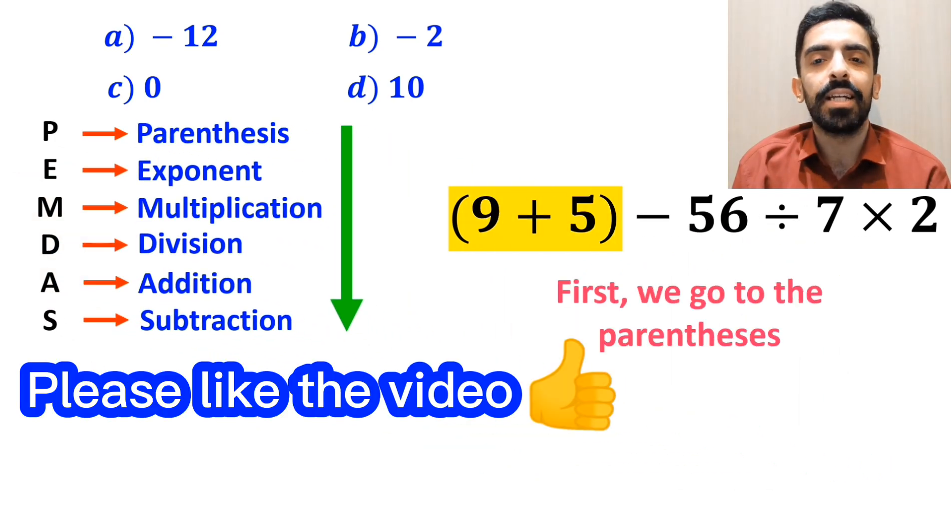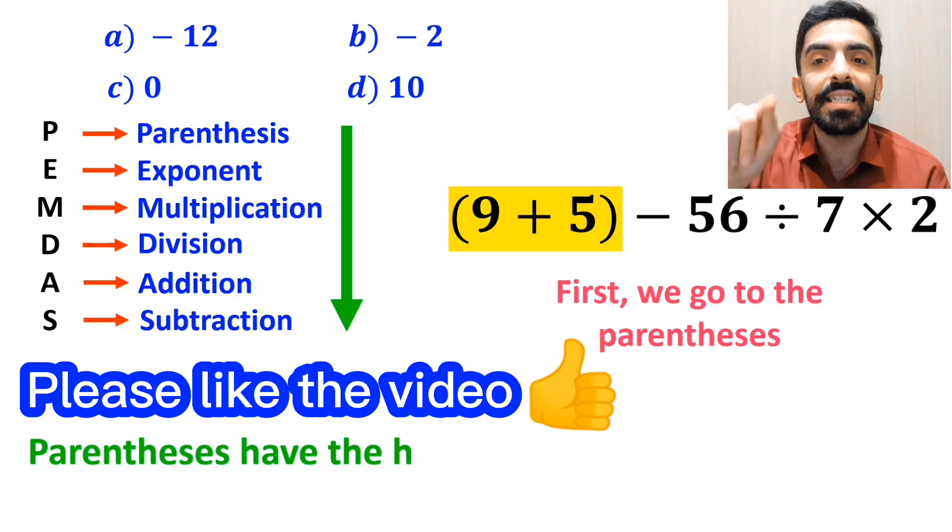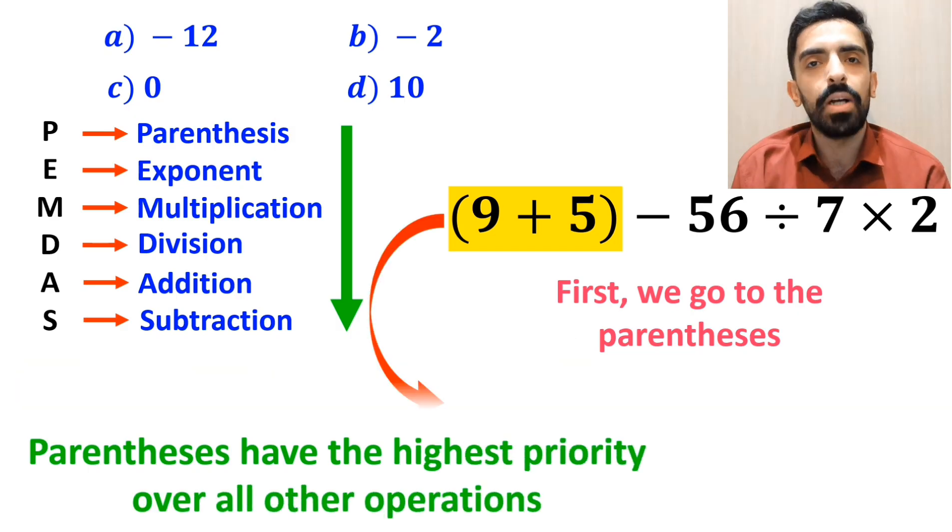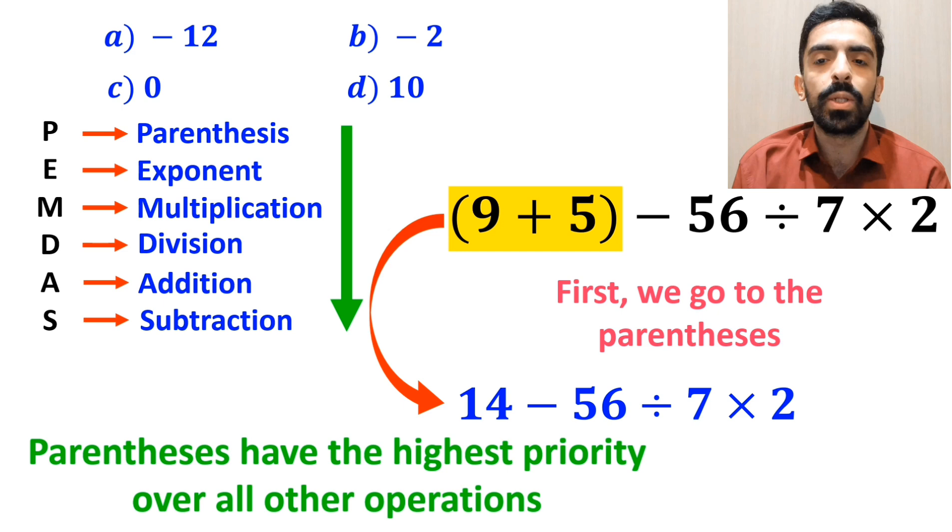Okay, first we go to the parentheses, because according to the PEMDAS rule, parentheses have the highest priority over all other operations. So, we can write this expression as 14 minus 56 divided by 7 times 2.